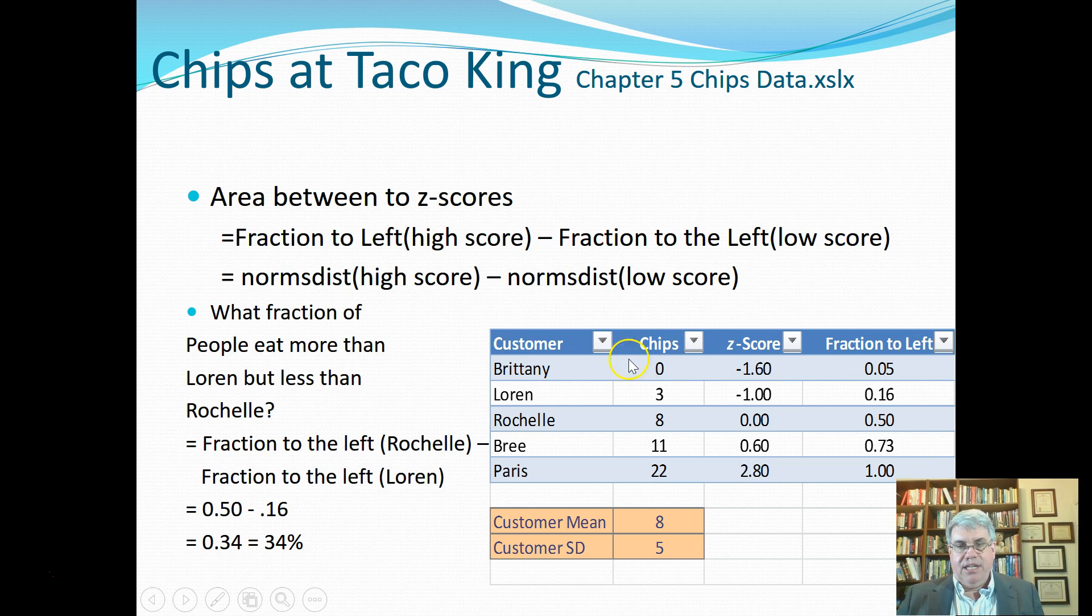So Brittany ate very few chips, so there was only about 5% of the people that ate less than her. Paris ate 22, and it was close to 100%, like 99.7, if we were to increase the number of decimals there.